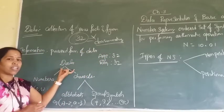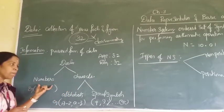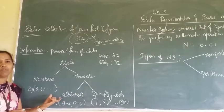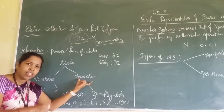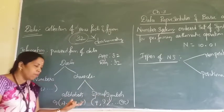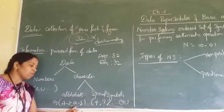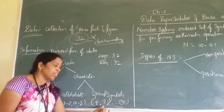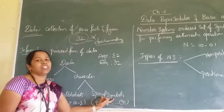Again, regarding data types, we have two types: numbers and characters. Numbers include all the digits from 0, 1, 2, 3, 4, and so on. When you come to characters, it is broadly classified into two types: alphabets and special symbols. Alphabets include capital A to capital Z as well as small a to small z. Special symbols include plus, minus, question mark, percentage, slash, and similar symbols.